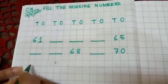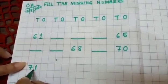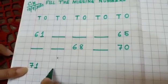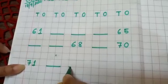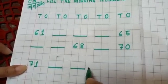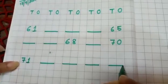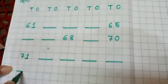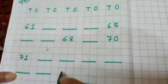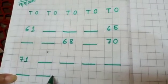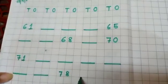Next, leave two boxes and write seventy-one. Then give one, then give one, then give one, then give dash. Again leave one box and give dash. Again leave one box and give dash. Again leave one box and give dash. Again leave one box and write seventy-eight, then dash, dash.